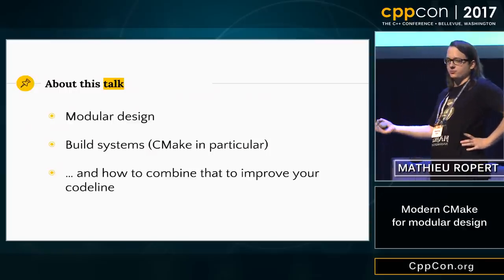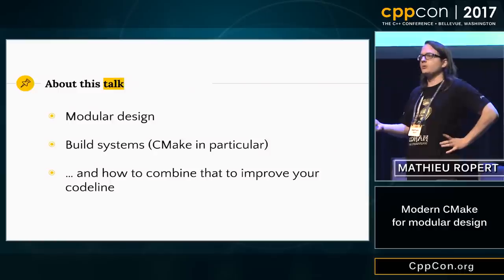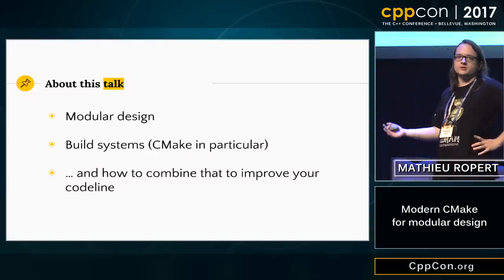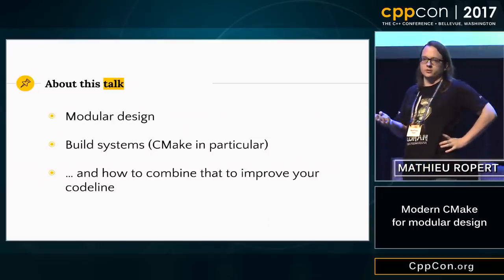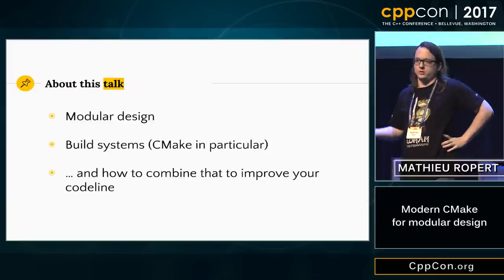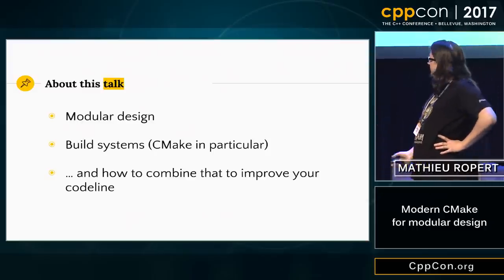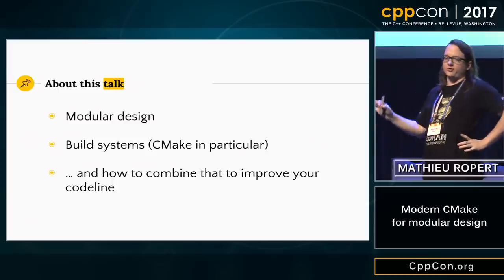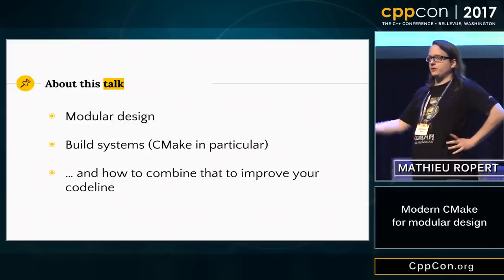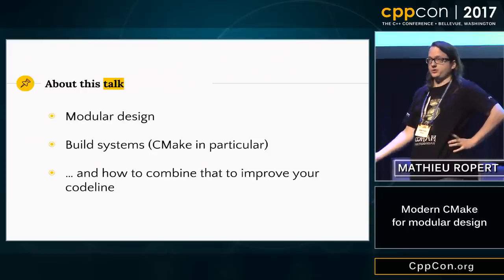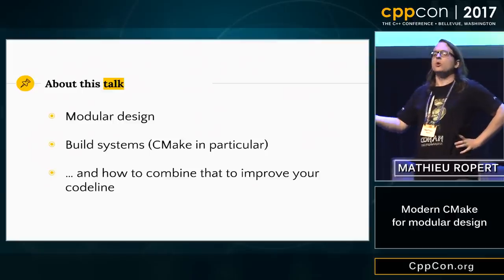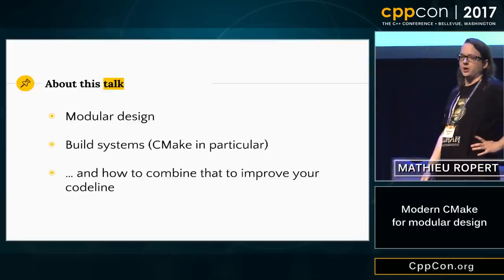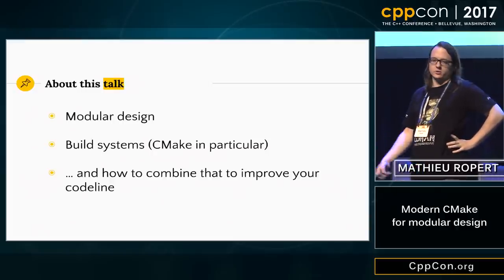Technically speaking, any build system worth its salt should be able to allow you to use some patterns that will give you the same results. I'm going to use CMake because that's what everybody uses if I trust GitHub or any open-source project. But think of that as just an illustration. Most of what I will tell you today is taken from other build systems, some considered more modern, that you can also have with CMake without the big pain of changing your entire build system.